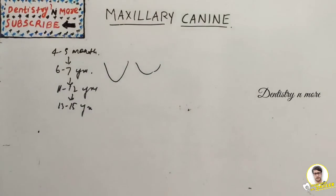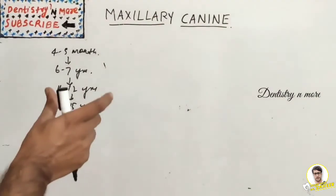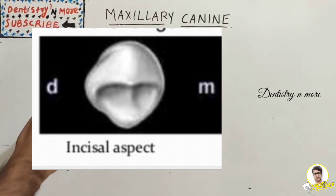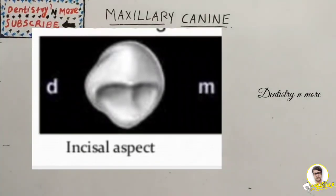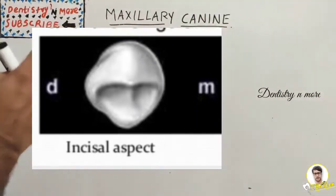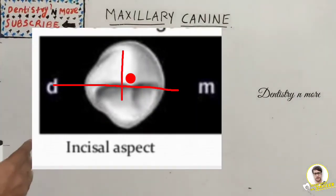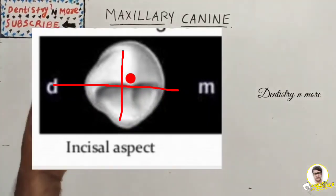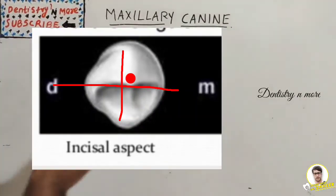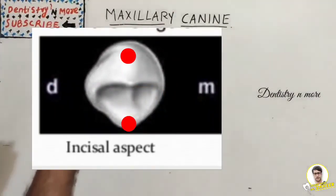From the incisal aspect, the labiolingual dimension is greater than the mesiodistal dimension. The maxillary canine is convex in both its labial and lingual outlines. The cusp tip is labial to the center of the crown labiolingually and mesial to the center mesiodistally. The labial ridge and cingulum are very noticeable from this aspect.